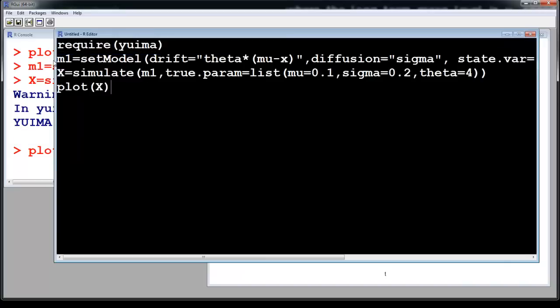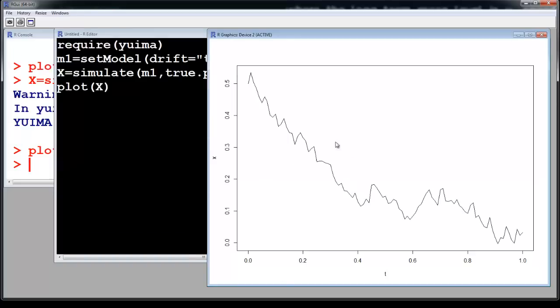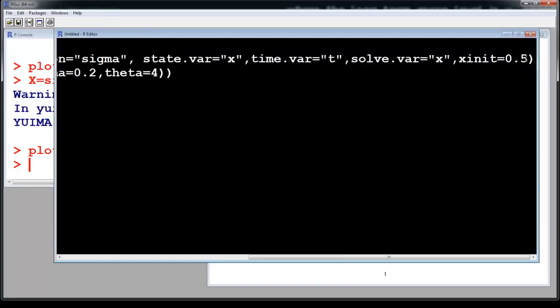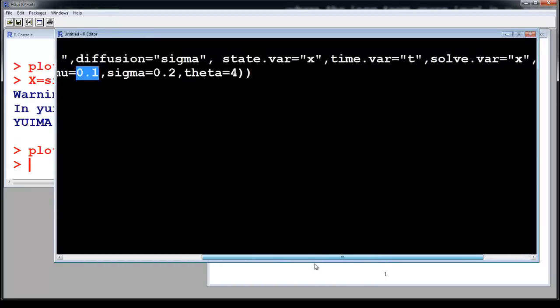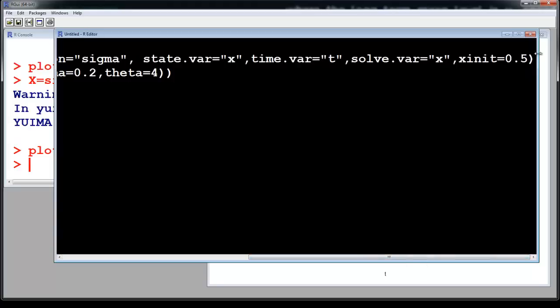So the idea is for Monte Carlo simulation plotting once doesn't give you much. So you plot a thousand times and then you make a corresponding probability distribution. So notice that we are always going down because initial value I'm taking is 0.5 and mean is 0.1.